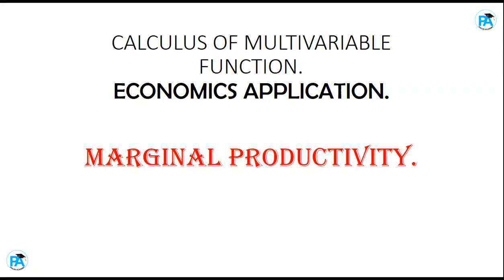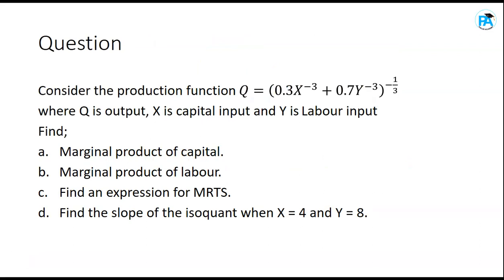Hi and welcome. Today we are going to look at marginal productivity, an economic application of calculus of multivariable functions. Consider the production function q equals (0.3x^(-3) + 0.7y^(-3))^(-1/3), where q is output, x is capital input, and y is labor input. We shall find: (a) marginal product of capital, (b) marginal product of labor.